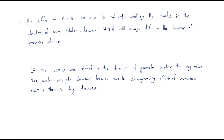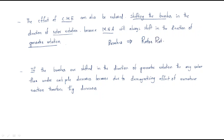The cross magnetizing effect can be reduced by shifting the brushes in the direction of rotation. In order to decrease this effect, the brushes need to be shifted. When the brushes are shifted in the direction of rotor rotation, the minor neutral axis will be shifted in the direction of the guided rotation.